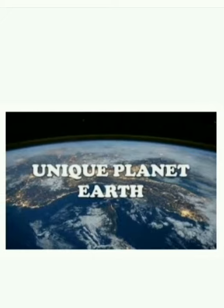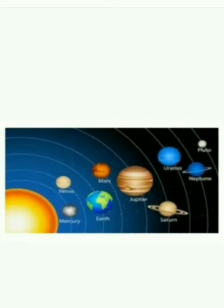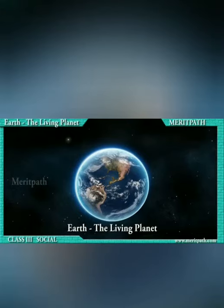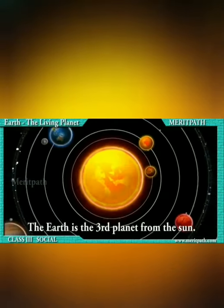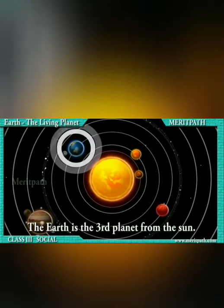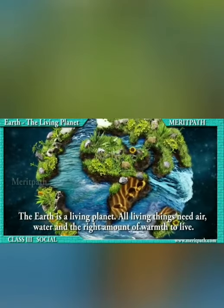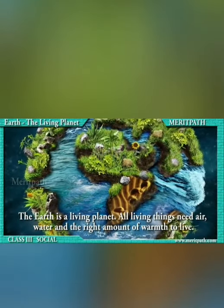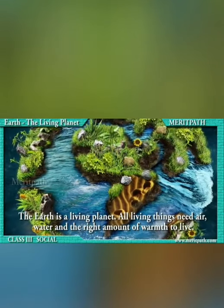Then earth is a unique planet. In solar system there are eight planets and the third planet is earth. Earth is a unique planet because we are leading life on earth. Earth is the living planet. Earth is the third planet from the sun and it is the only planet to support life because of the abundance of water.